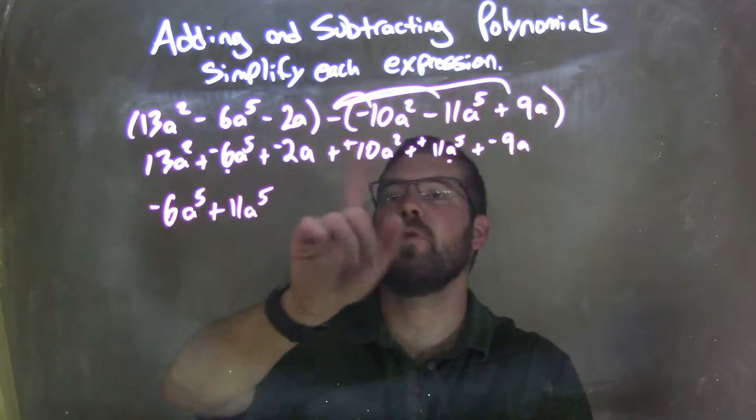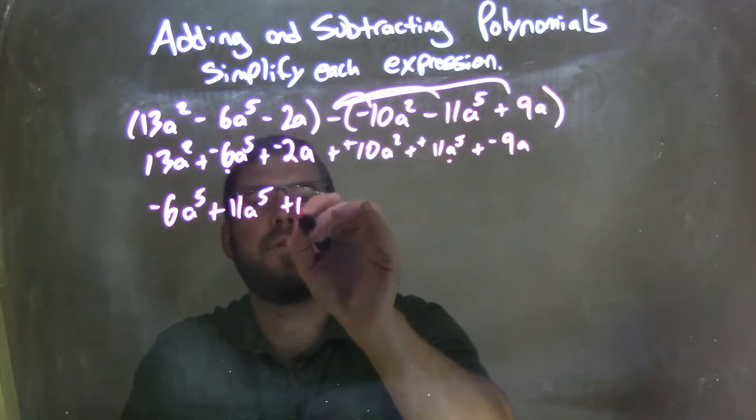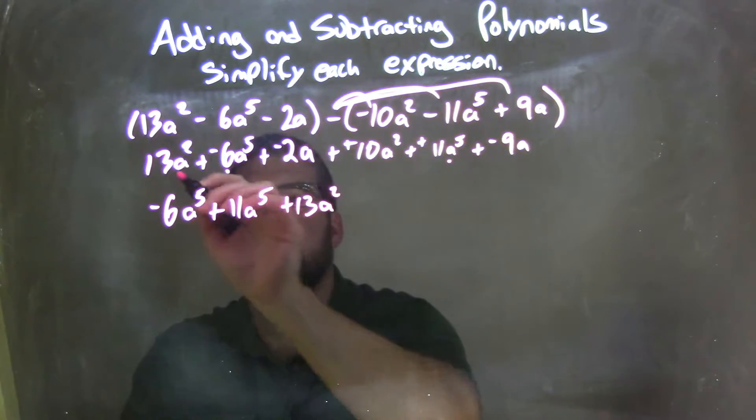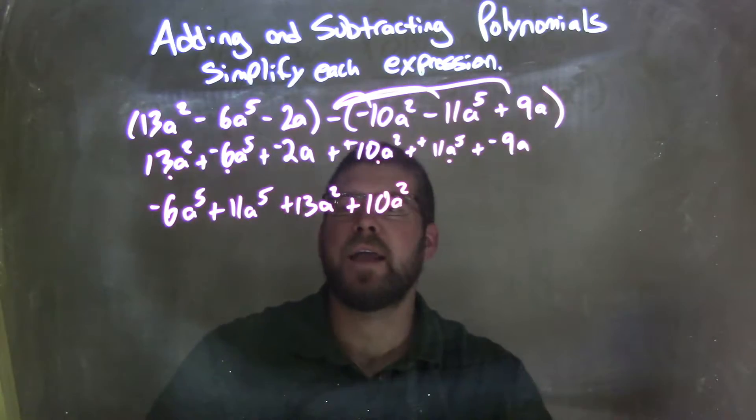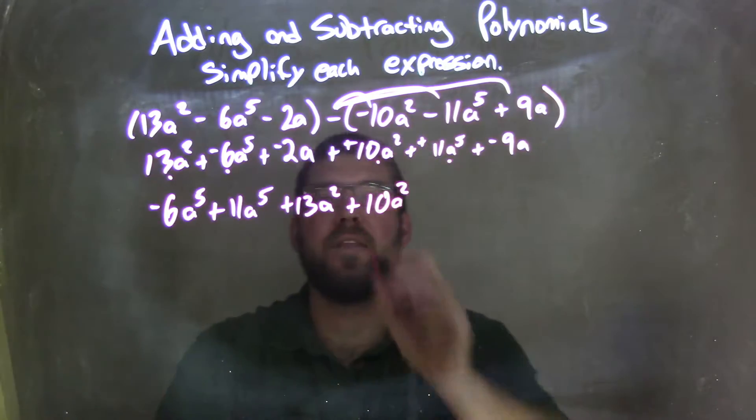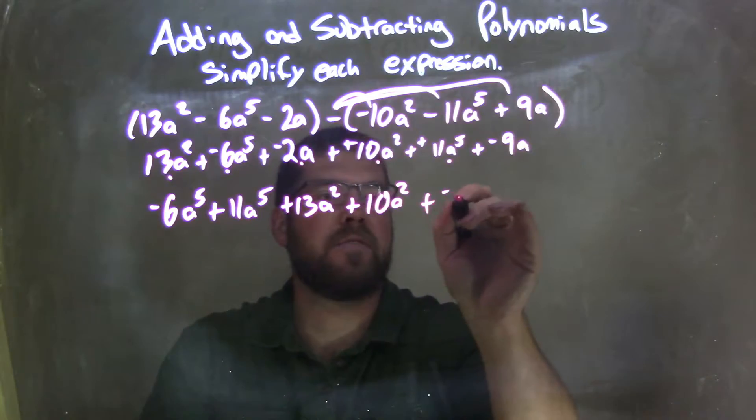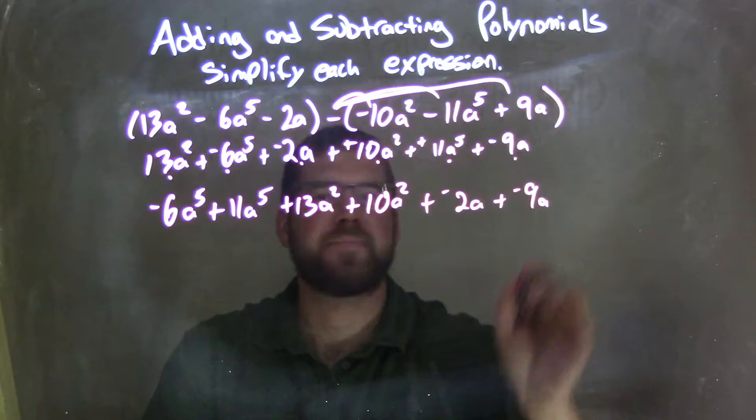Next highest power I see is the second power. So we have plus 13a squared, plus 10a squared. And now let's go to the next one, just the a's. The negative 2a, plus a negative 2a, and then plus a negative 9a.